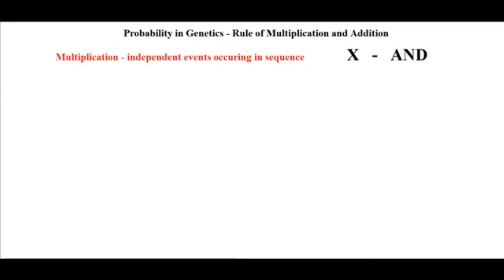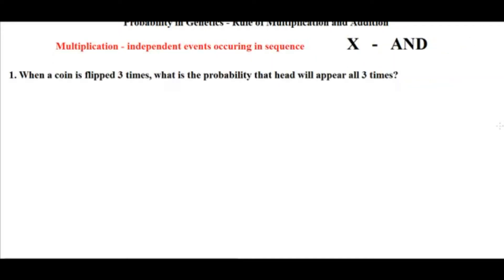Let's start with multiplication. Multiplication is used in genetics when we are dealing with independent events occurring in a sequence. How would we know to apply the rule of multiplication? By the presence of the word 'and' in the question. You will see the word 'and' present in the question — that means you need to apply the rule of multiplication.